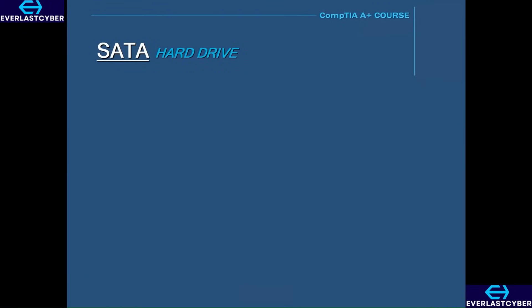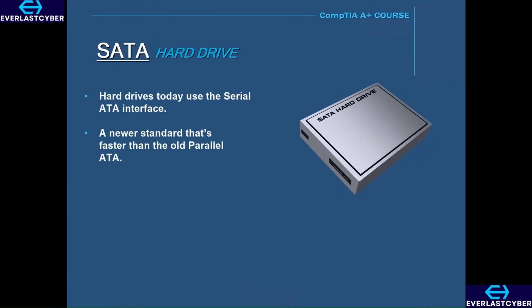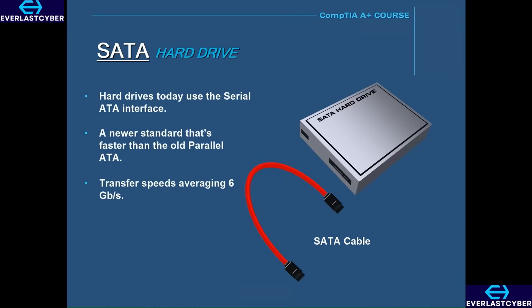Hard drives today use the Serial ATA interface. This is a newer standard that is faster than the old Parallel ATA interface. Instead of data traveling in a parallel path, the data travels in a serial path, meaning that data travels one bit at a time. SATA drives have transfer speeds averaging 6 gigabits per second, which is considerably faster than the old Parallel ATA interface. Other advantages of SATA drives are that they are hot-swappable and the cables are a lot smaller, which makes cable management a lot easier.